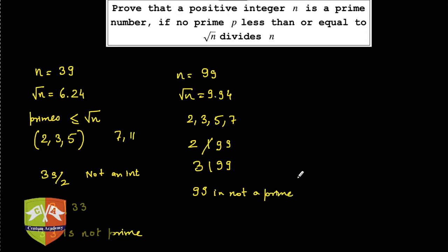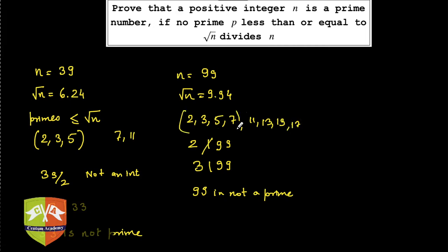So why are we doing this? We didn't need to check divisibility by other prime numbers like 11, 13, 17, or 19. We just needed to check 2, 3, 5, and 7, and our job was done.